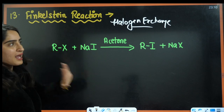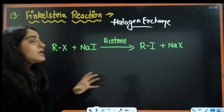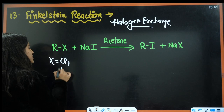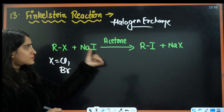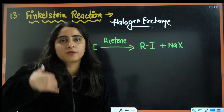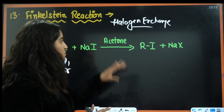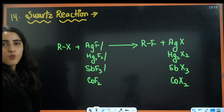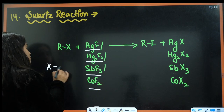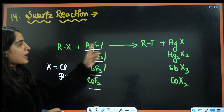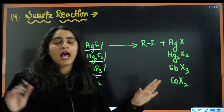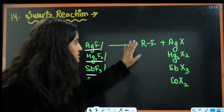Next is Finkelstein reaction and Swartz reaction — both are halogen exchange reactions. In Finkelstein, the halogen can be Cl or Br; we use NaI in presence of acetone and it gets converted into RI. This is a reversible reaction, so acetone is used to drive it forward. In Swartz reaction, we use inorganic fluoride — X (Cl or Br) is replaced by fluorine, because direct formation of RF is a very explosive reaction.